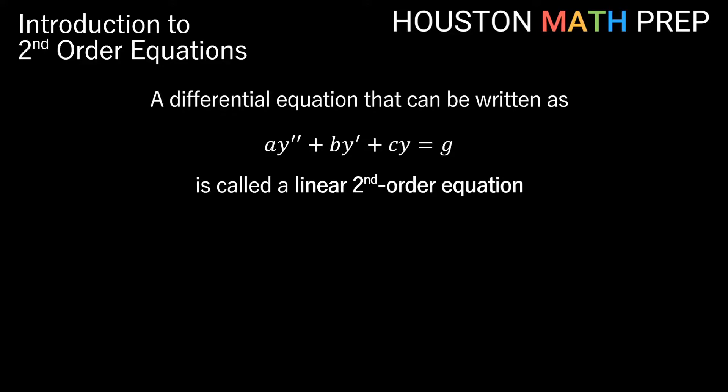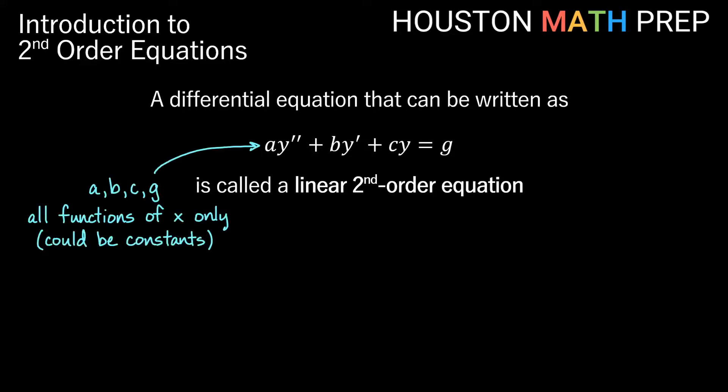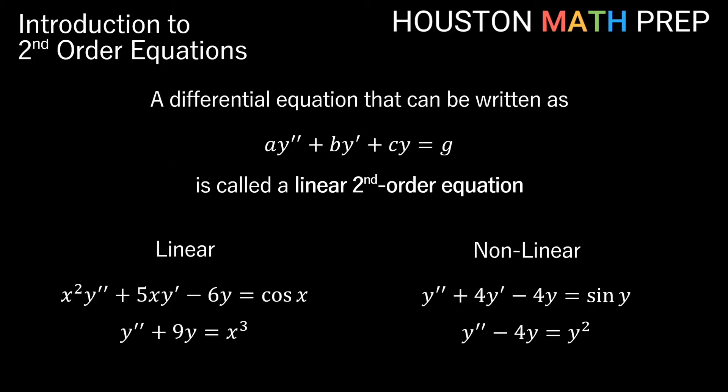For a linear second order equation, the a, b, c, and g that you see in this expression are all functions of x only. They could also be constants, but there shouldn't be any y terms in a, b, c, or g.